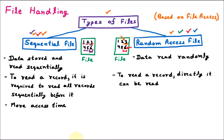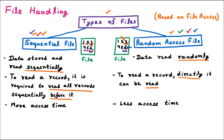In the random access file, if you want to access the last record, you can go directly to it — so it takes less access time and is very fast. The differences: in the sequential file we read sequentially, but in random access we read randomly. To search a record in sequential file we must read all previous records, but in random access we can directly read that record, so sequential has more access time while random access has less.